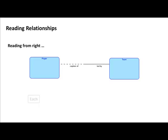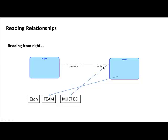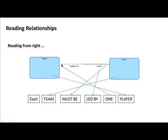Reading from the right: 'each team must be led by one player.' We start with 'each team', and since the line is solid, we say 'must be led by'. There is no crowfoot, so we say 'one player.' These relationship names are very important because when looking at an unfamiliar situation, the lines simply do not make sense on their own. Naming them makes it easy for anyone — including yourself later — to understand the diagram.